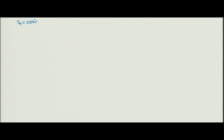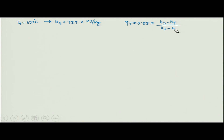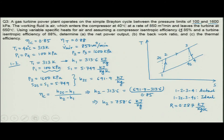Moving to the expansion process: the exhaust temperature T_4 is given as 650 degree centigrade, so H_4 = 959.2 kJ/kg. The turbine efficiency is 88 percent: η_T = (H_3 - H_4) / (H_3 - H_4s).